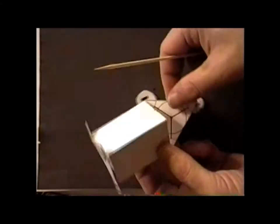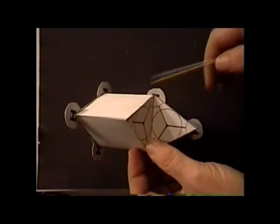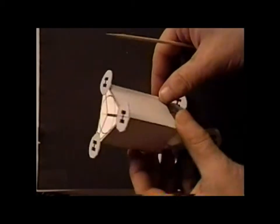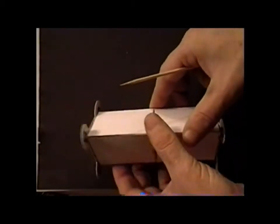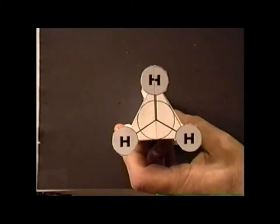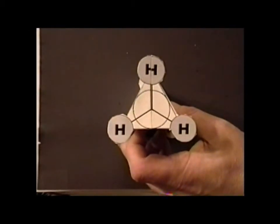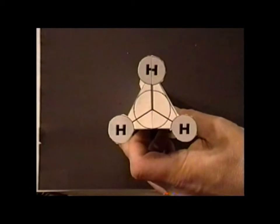And this is where the horizontal mirror plane would be. So we have a nice way of physically demonstrating where the horizontal mirror is for the eclipsed conformation of ethane, which belongs to point group D3H.